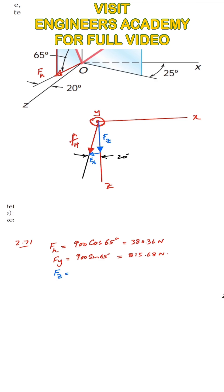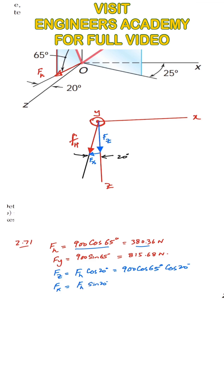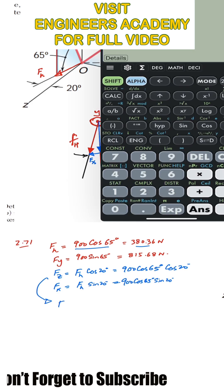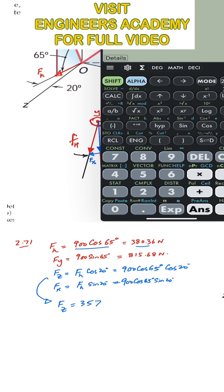So FZ = FH cos(20°), and FX is the sine component: FX = FH sin(20°) = 900 cos(65°) sin(20°). This gives FZ = 357.42 Newtons and FX = 130.09 Newtons. So these are our three rectangular components: FX = 130.09 N, FY = 900 sin(65°), and FZ = 357.42 N.